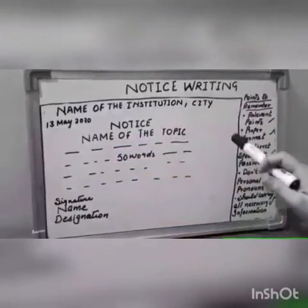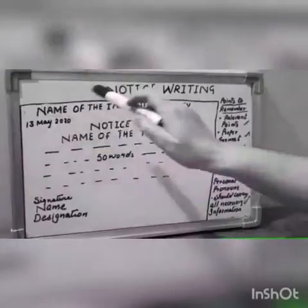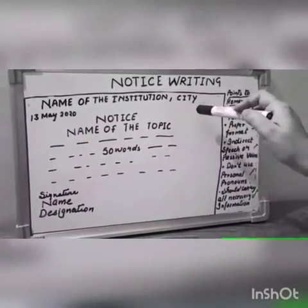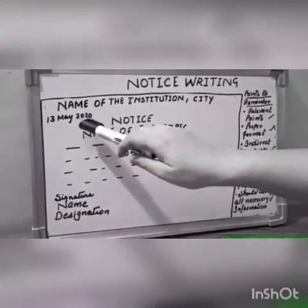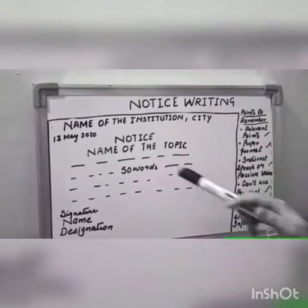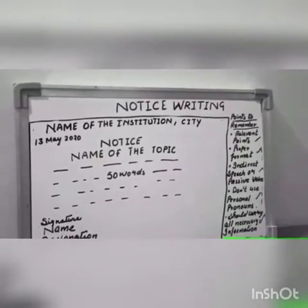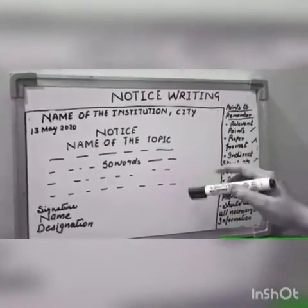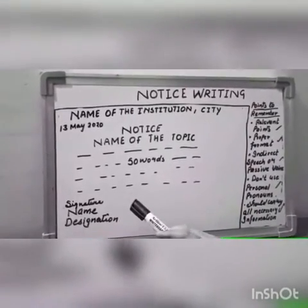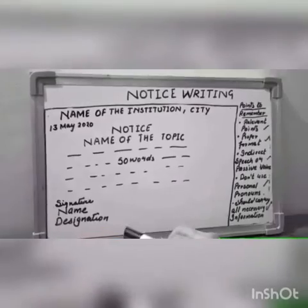Here is the format of notice writing. Firstly, in capital letters, write 'NOTICE WRITING', then draw a box with the name of the institution and name of the city in the middle, followed by the date. Then the word 'NOTICE' in capital letters must be in the middle, then the name of the topic also in capital letters. Then write the contents of the notice in 50 words, followed by the signature, name, and designation of the person issuing the notice.